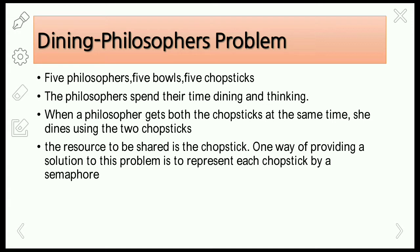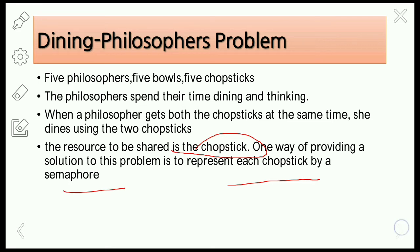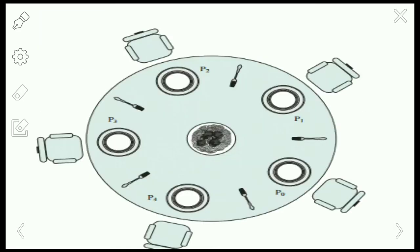The philosophers will be doing two things: dining and thinking. When the philosopher gets both chopsticks at the same time, only then will she dine using the two chopsticks. With only a single chopstick, the philosopher cannot have the food. The resource to be shared is the chopstick, and that's why we are representing each chopstick as a semaphore.